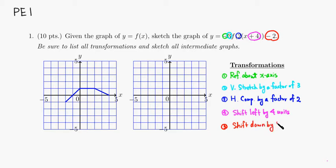Now let's sketch the picture. I'm looking at the corner points, begin points, and ending points. For the reflection: the y-value of negative one becomes positive one, so it reflects over the x-axis. This point reflects to the other side of the x-axis. Since this point is sitting on the x-axis, it stays there. So you have a graph which looks like this.